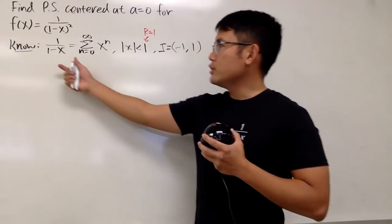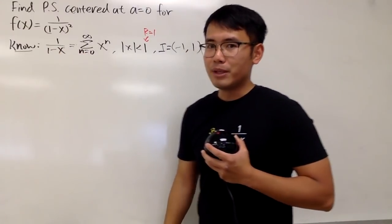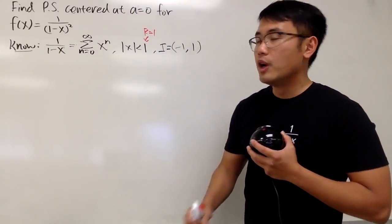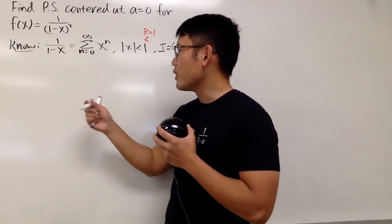If we differentiate this guy, based on the quotient rule if you would like, you will see that you will have to square the denominator, and that's the good thing. This is what we'll do. We'll just look at this and differentiate both sides.